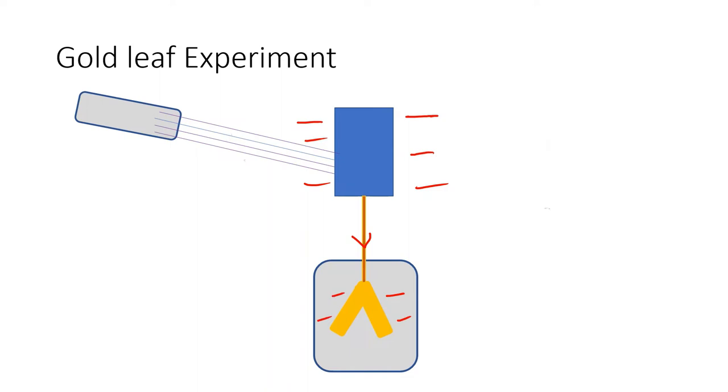If a visible light of any wavelength falls on the zinc plate, there will be no effect on the position of these gold foils. So, no effect.